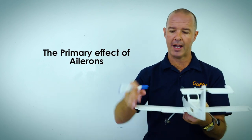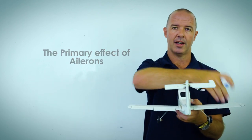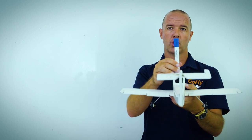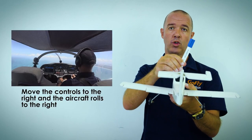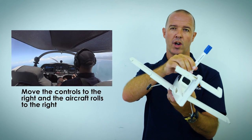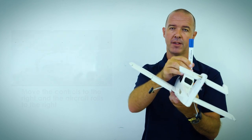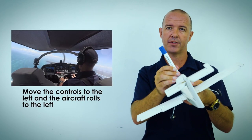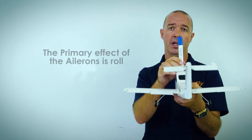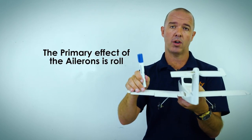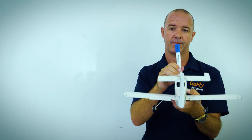We're now going to look at the primary effect of our ailerons, which are situated out on the wings. When I move the control column to the right, the aircraft will roll to the right. When I move the control column to the left, the aircraft will roll to the left. So we can say that the primary effect of our ailerons is roll to the right or left.